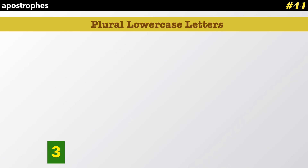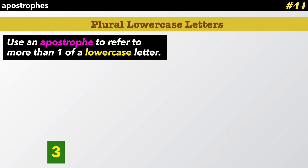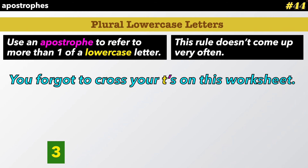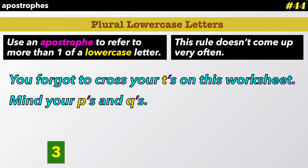Rule number three is very rare: plural lowercase letters. Use an apostrophe to refer to more than one of a lowercase letter — only lowercase, and again, this rule doesn't come up very often. You forgot to cross your T's on this worksheet — T apostrophe S. Mind your P's and Q's — a common phrase in English. P apostrophe S, Q apostrophe S.